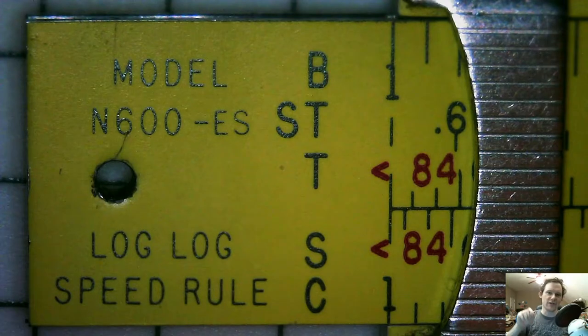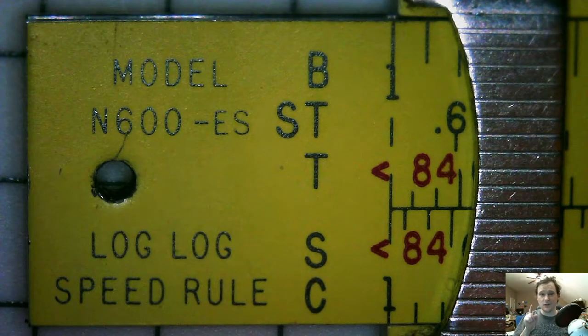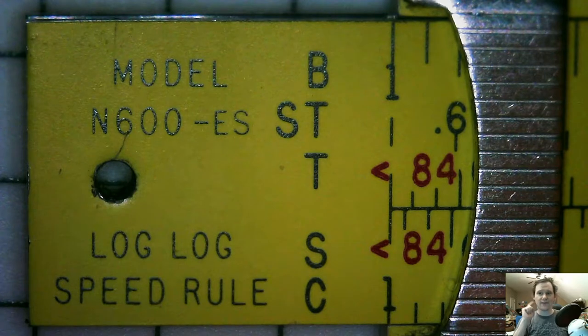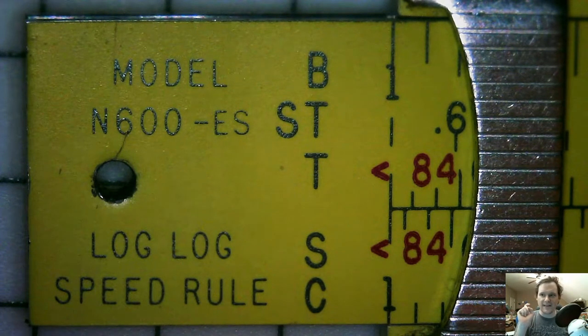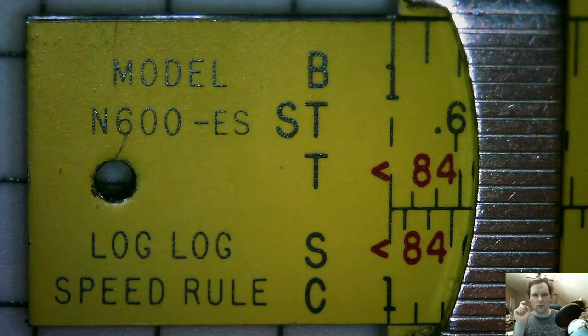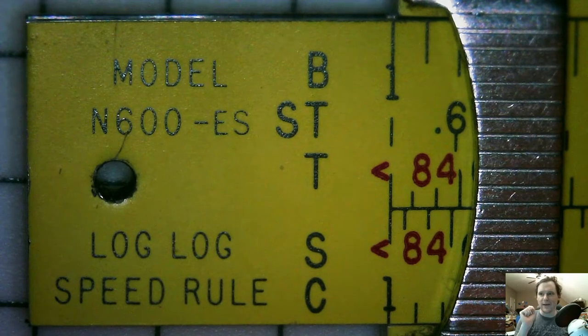But what I want to do is show you how to get the same result using a slide rule. Now what I've got up on the screen is my Pickett Model N600ES log-log speed rule underneath my microscope.